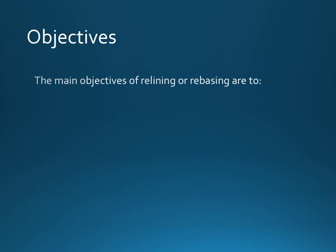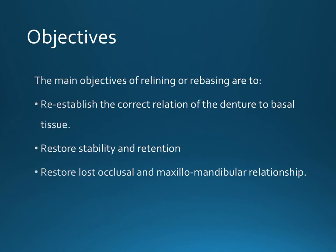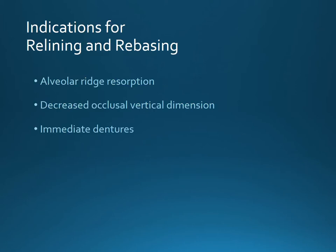The main objectives are: to reestablish the correct relation of the denture to the basal tissues, to restore stability and retention — one of the most important factors in fabrication of a complete denture — and to restore the lost occlusal and maxillomandibular relationship, or to restore jaw relations in short.